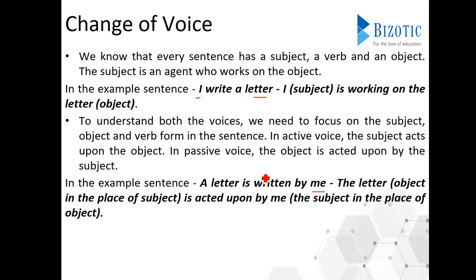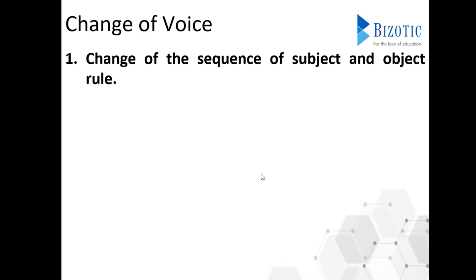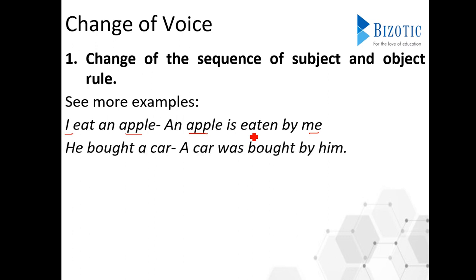The position of the subject and object differs. The sequence of subject and object in active voice is just reversed when expressed in passive voice — that is Rule Number One: the change of sequence of subject and object. For example, 'I eat an apple' becomes 'An apple is eaten by me.' Similarly, 'He bought a car' becomes 'A car was bought by him.'